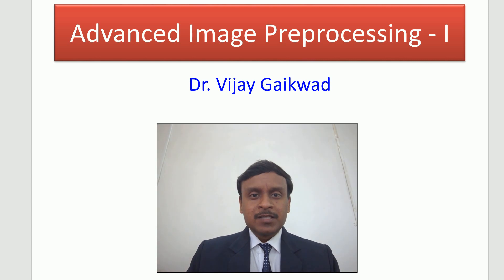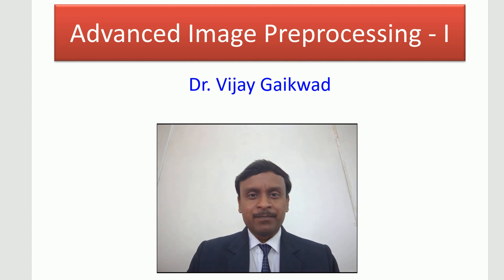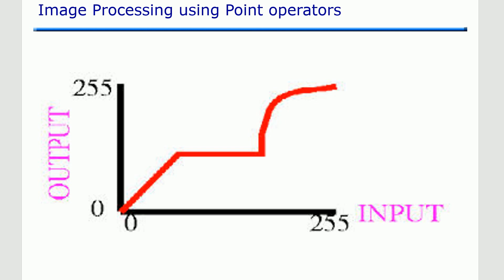These techniques would be very useful in the development of computer vision algorithms where you require greater accuracy and greater detection rate. Let us discuss the point operator. The point operator is an image transform tool which is very useful whenever you want to convert the intensities or colors of an input image and transform these values into a new set of values.